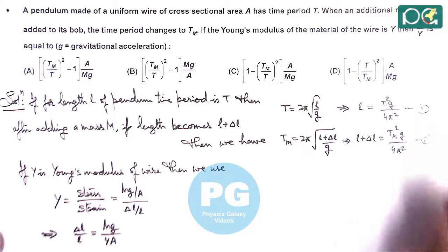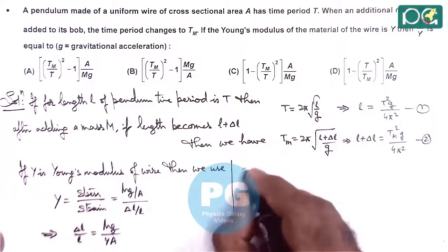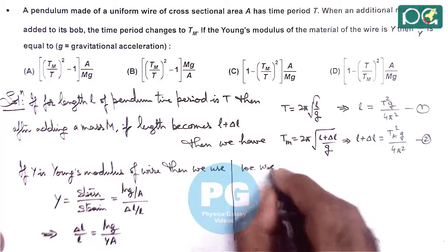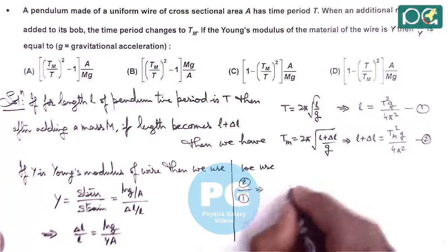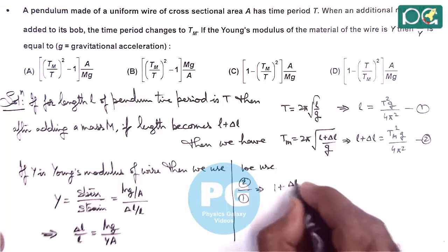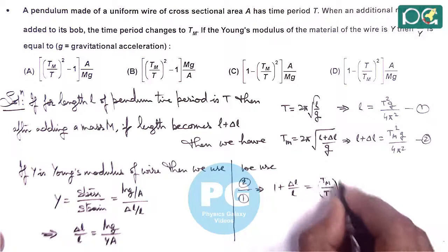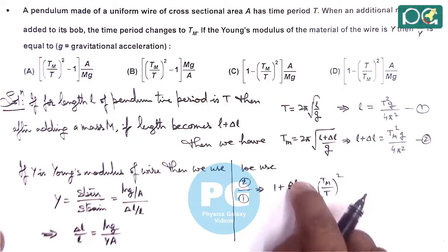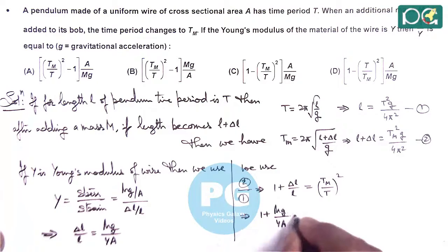If this is our equation 1 and this equation 2, then here we use equation 2 divided by 1. If we divide the two equations, this gives us 1 + delta L/L, and this value is (Tm/T)². If we substitute the value of delta L/L from here, this gives us 1 + Mg/YA equals (Tm/T)².